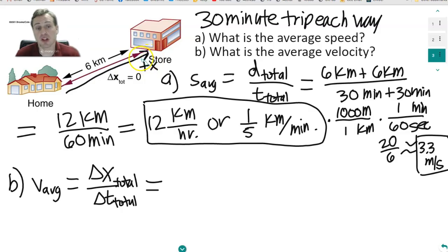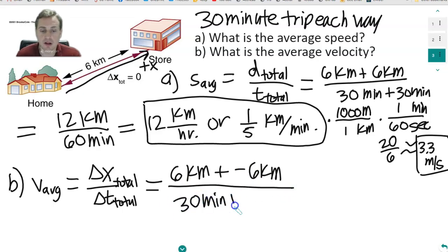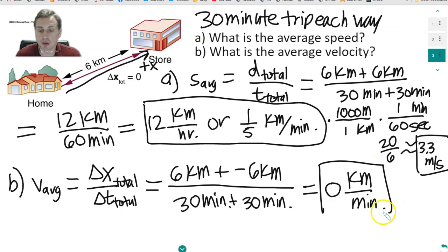You should get the same answer if you set up the x-axis the other way. But it will be 6 kilometers going to the store, but negative 6 kilometers coming back from the store, and divide that by, again, 30 minutes plus 30 minutes. But notice, that's just going to give us 0 kilometers per minute. Now, why is that? Well, because if you start and you end at the same point, there's no total displacement. You haven't changed your position in the universe.